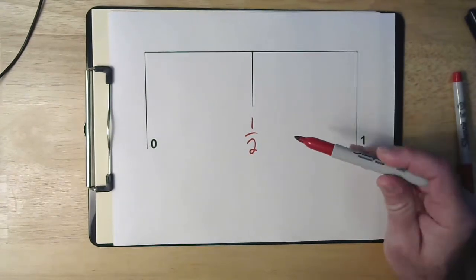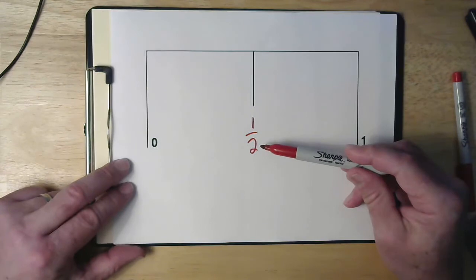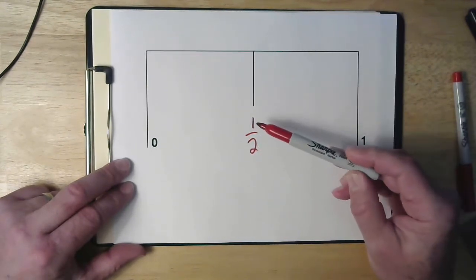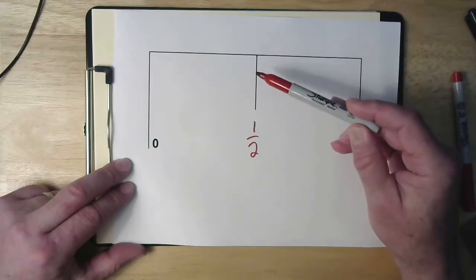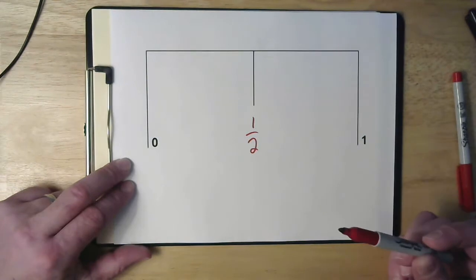So if it's been a while since you've worked on fractions, remember that the reason that's a two down there is because it means we split the inch up into two pieces, and this is the mark where one of those two pieces is.